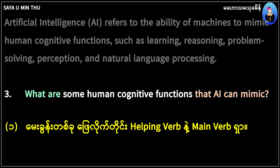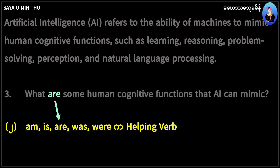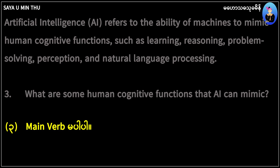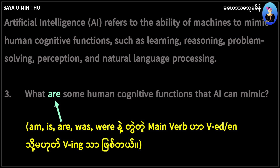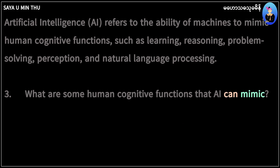The main verb is the main verb. The main verb forms include: is, was, were, or verb-ed, verb-en, to be verb-ing. Some human connected functions that AI can mimic — so this is a verb-ed or verb-ing structure. The main verb here is 'can mimic'.